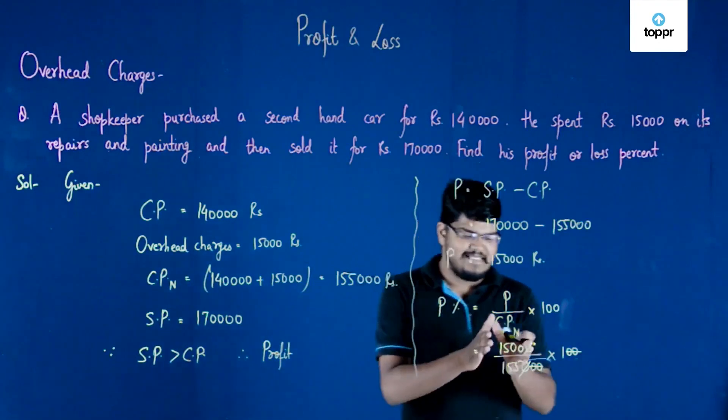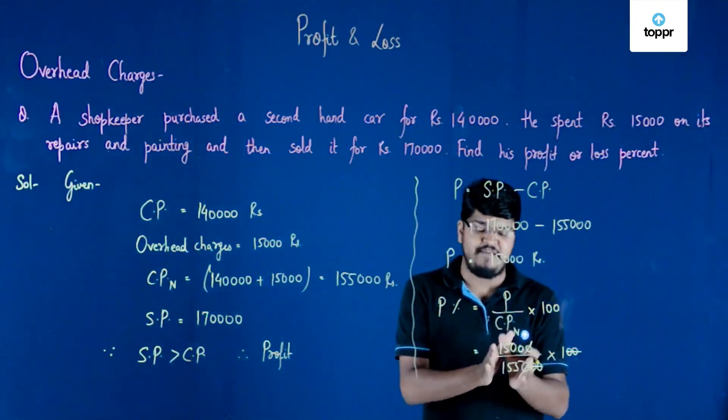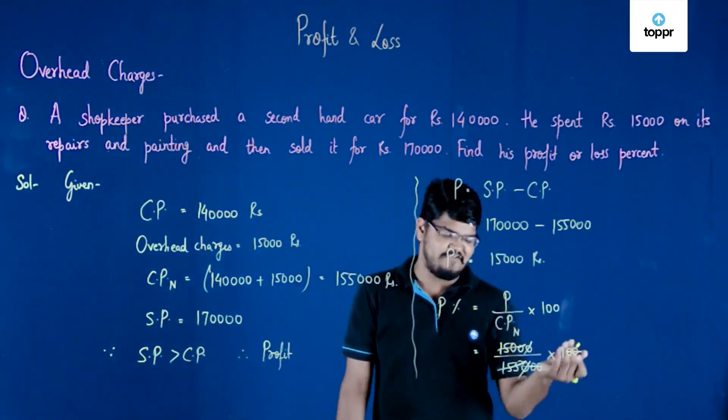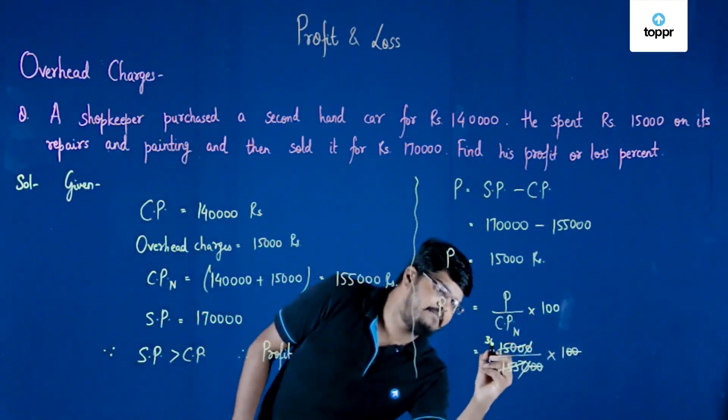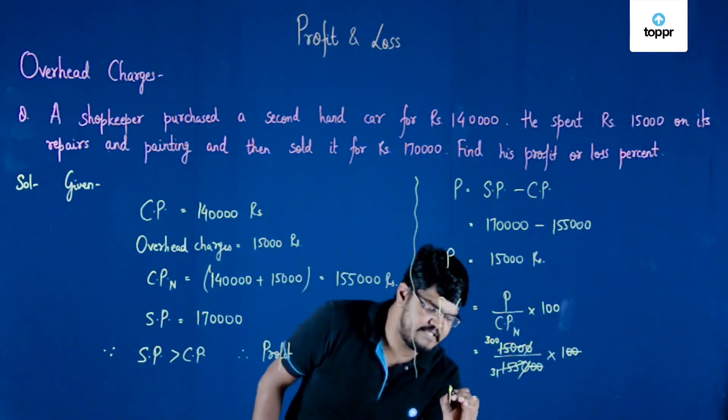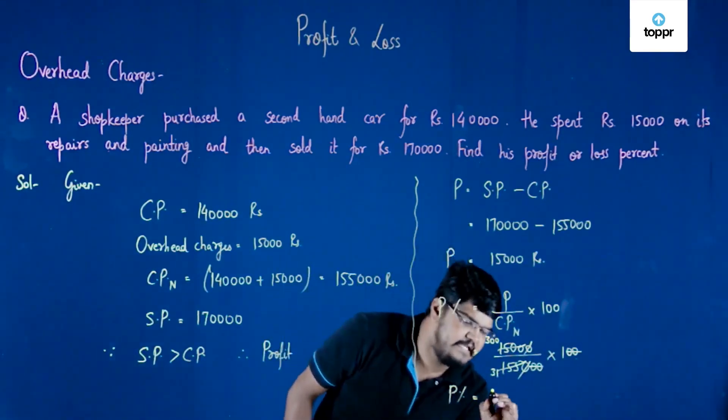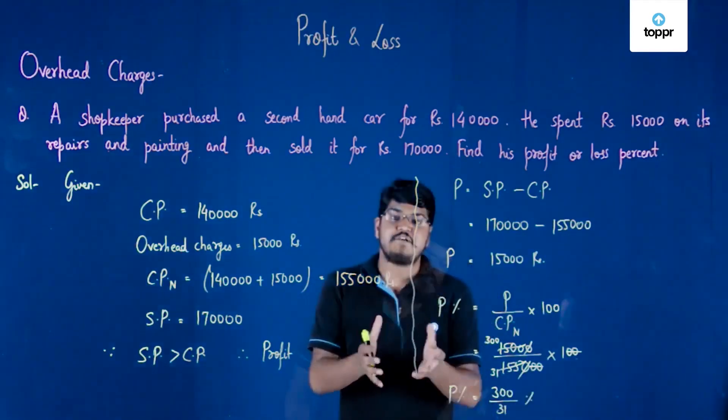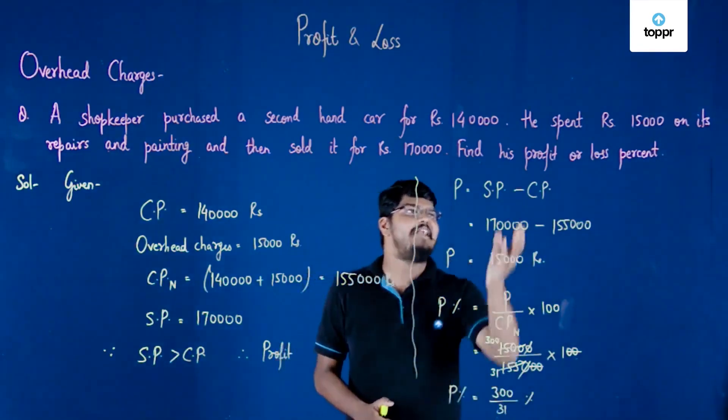What we are left with is 1500 upon 155, but we already know that both these numbers are multiples of 5. So we will cancel them out. This will become 300, this will become 31. So I can say that the profit percent of this particular case is 300 upon 31%. This is the required profit percent.